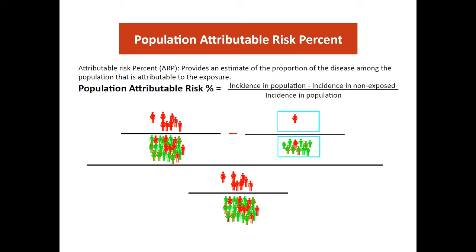There is another related term: the population attributable risk percent. This describes the proportion of disease incidence in the whole population attributable to the risk factor. We calculate the incidence rate in the whole population minus the incidence rate in the non-exposed, divided by the incidence rate in the whole population.